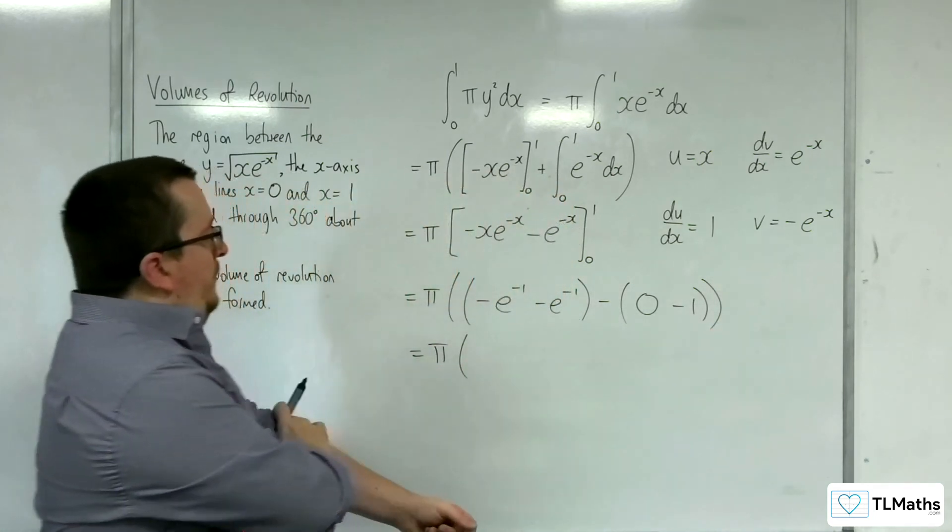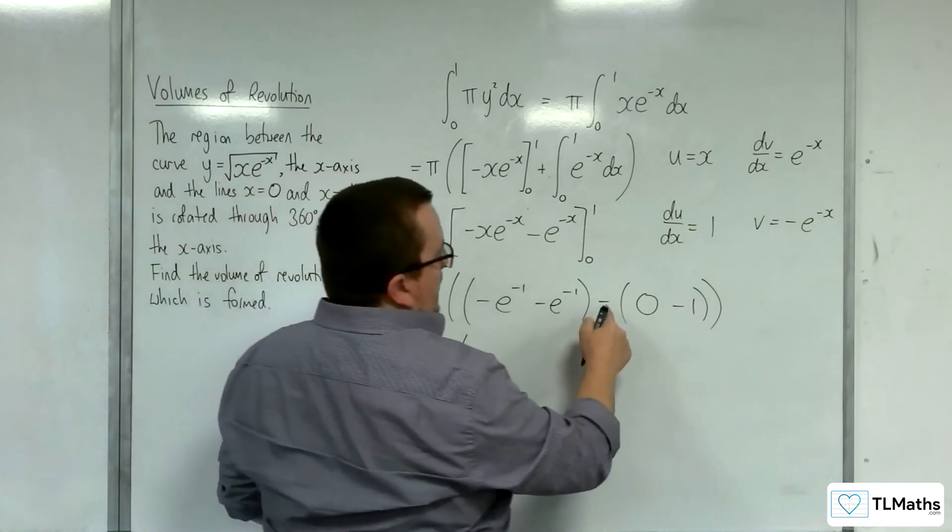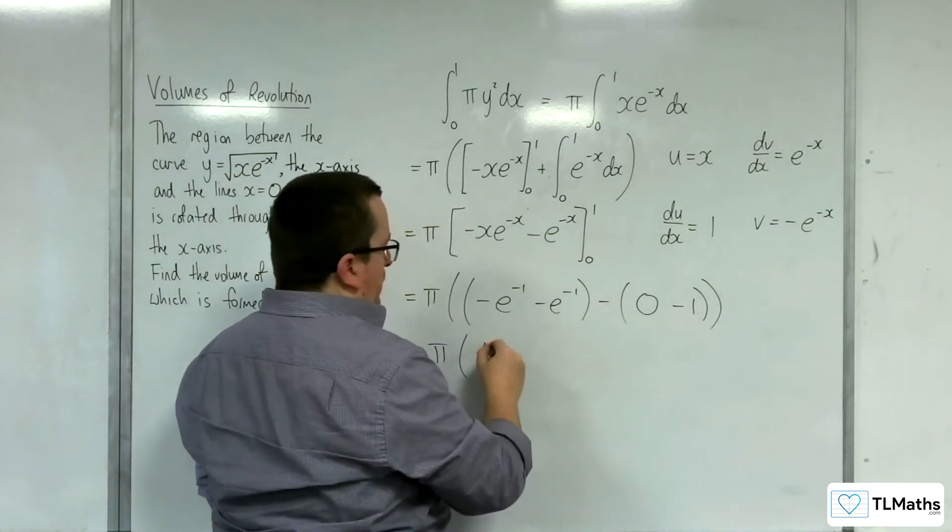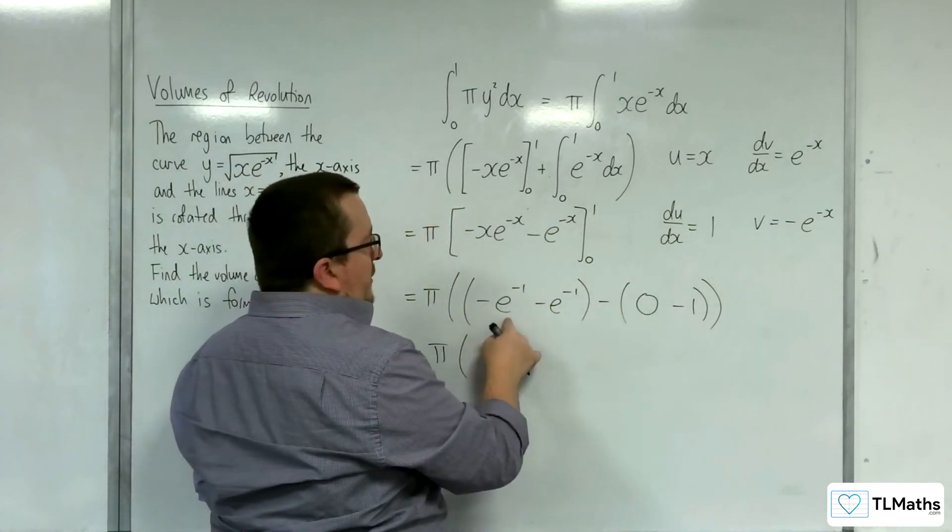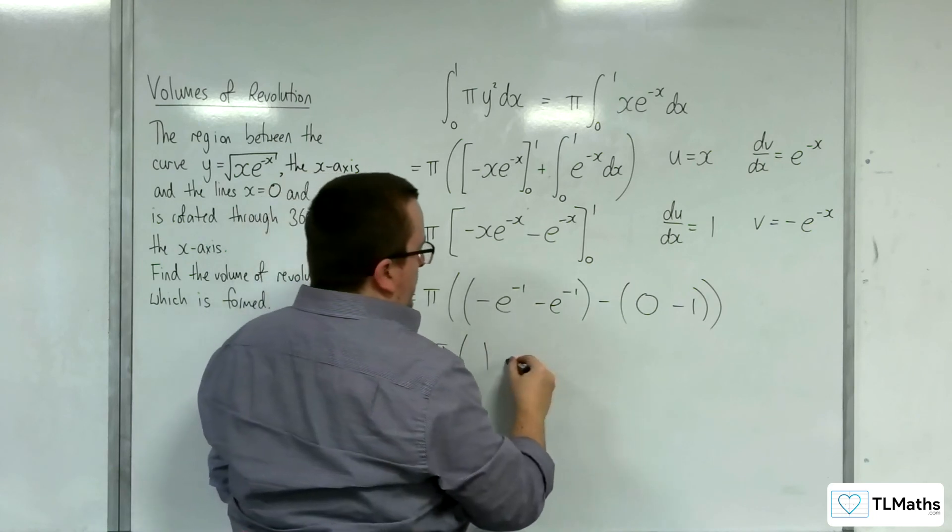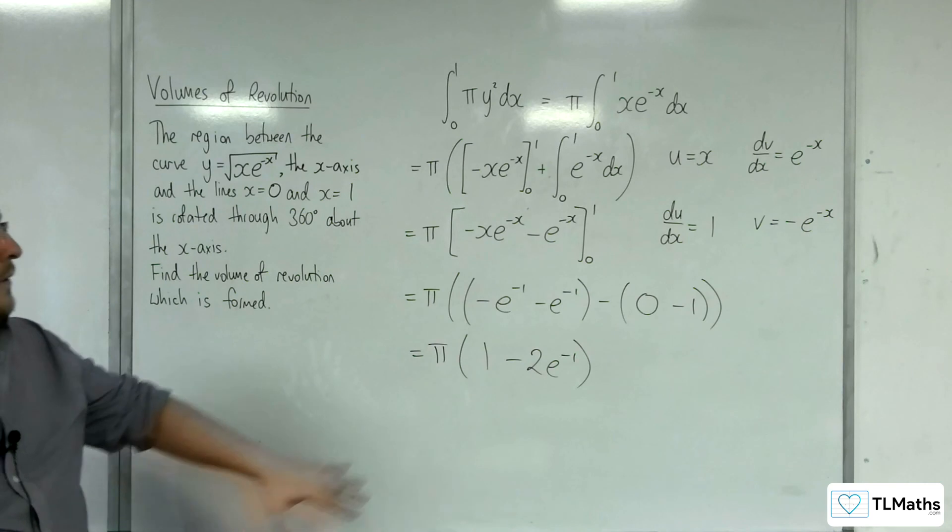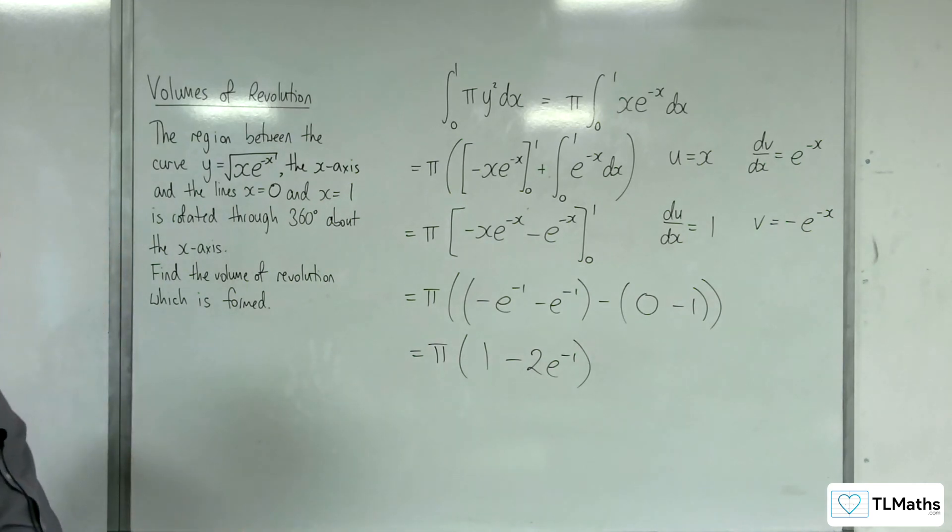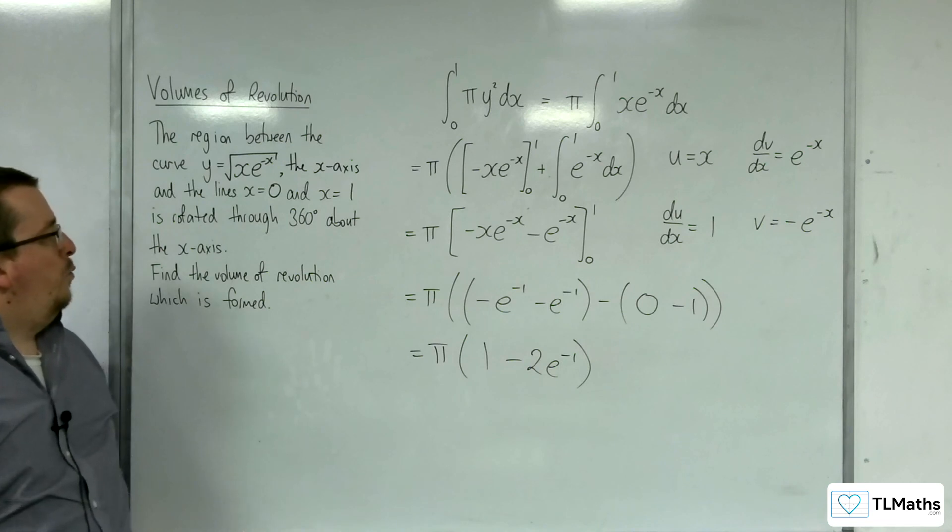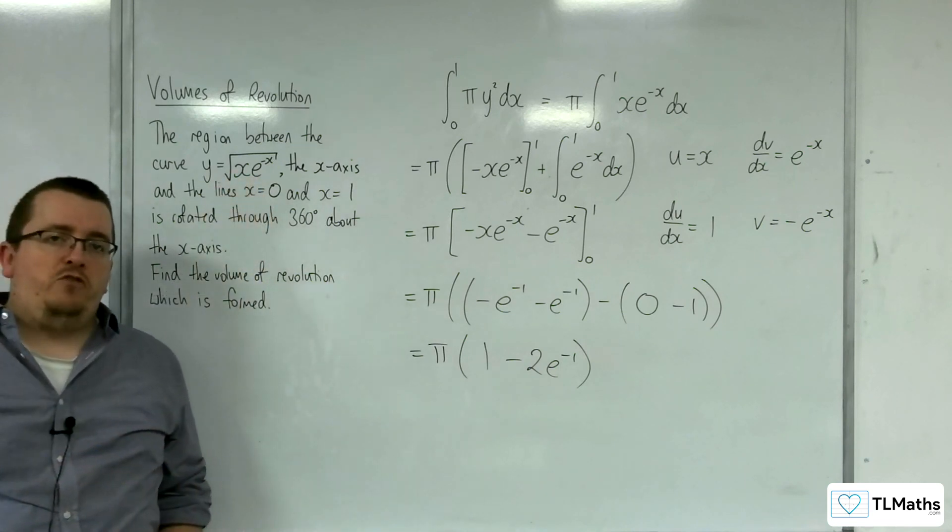So we have pi times, now we're going to get take away minus 1, which is plus 1, and minus e to the minus 1, take away e to the minus 1, be minus 2 e to the minus 1. And so that is the exact value of the solid formed when this curve is rotated about the x-axis between 0 and 1.